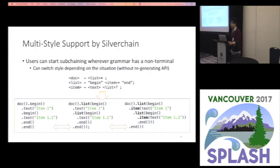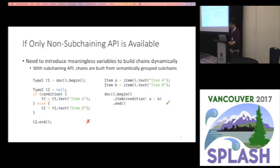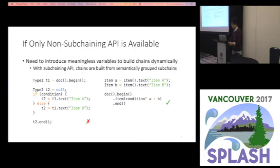This multi-style support is very important in practical use. The first case is where only non-subchaining API is available. In this case, the users need to introduce meaningless variables to build a chain dynamically. As seen, users need to introduce meaningless variables such as T and T2 to change a part of a chain when using non-subchaining API.